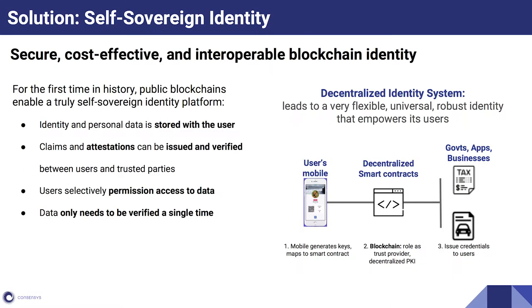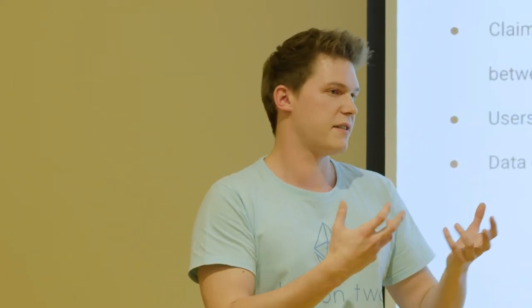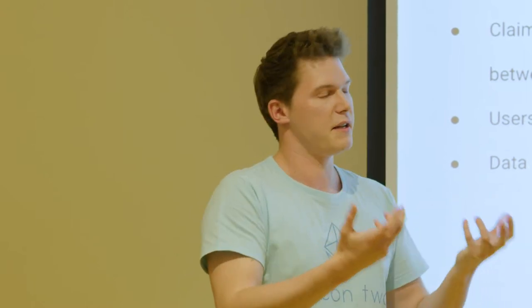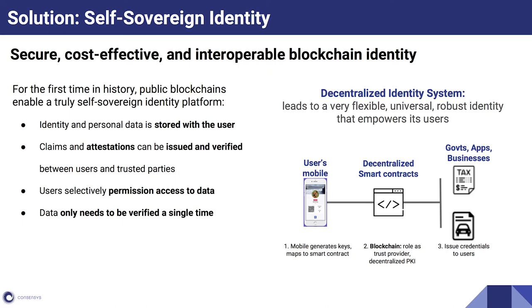We're trying to solve this with a self-sovereign identity solution. Using blockchain, we can create secure, cost-effective, and interoperable identity systems that give the identity and all personal data back to the user — the user is in complete control. We can attest different pieces of information to our identity and choose what gets attached and what doesn't. Those are attestations and claims. We can verify between users what data is true, and a user can selectively permission who gets access to their data — for example, an insurance company or bank asks for data, and you as the user choose whether to provide that access.